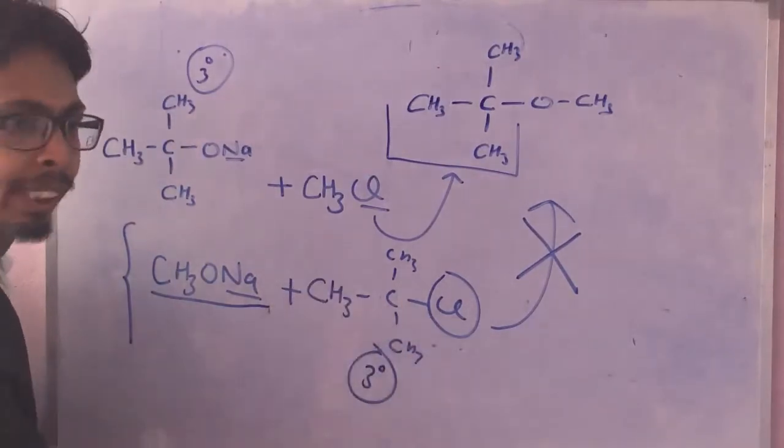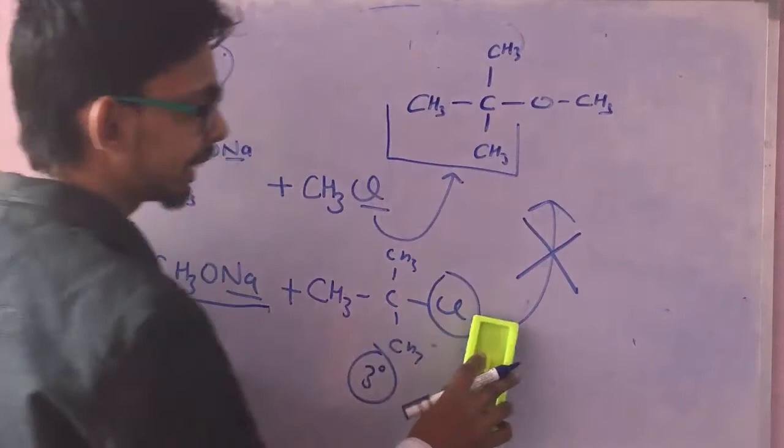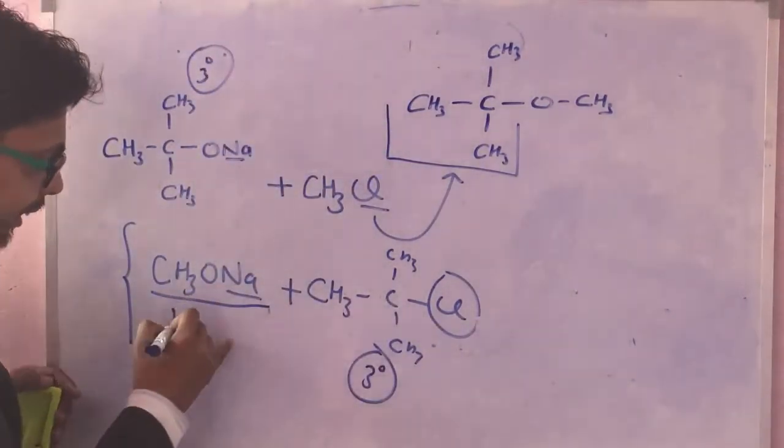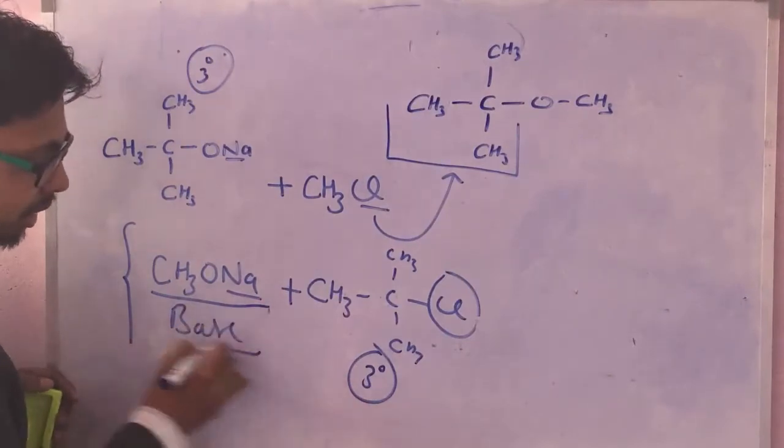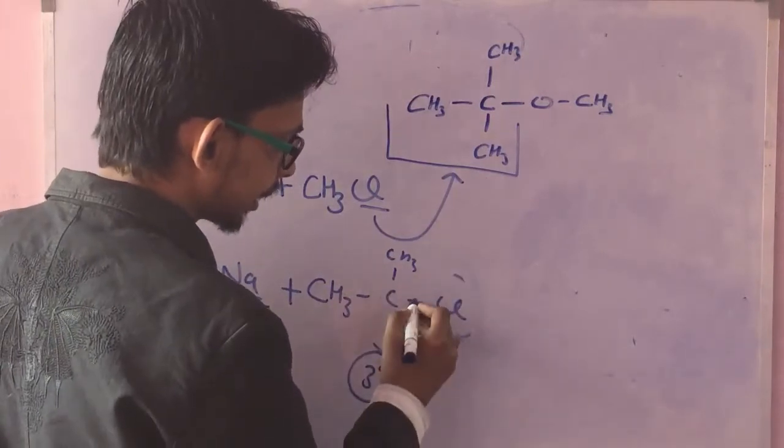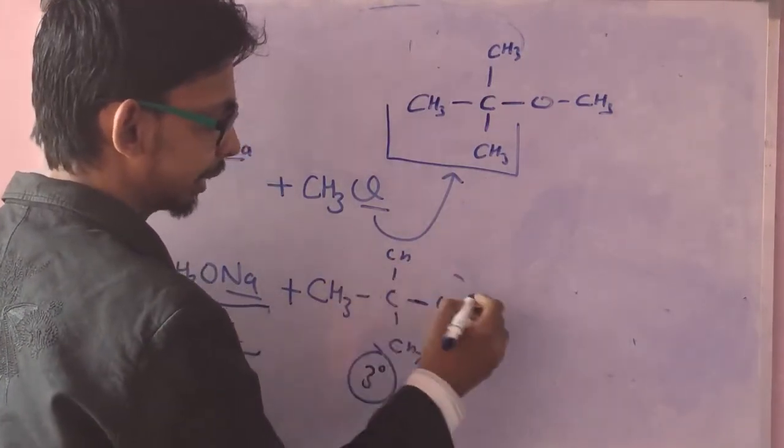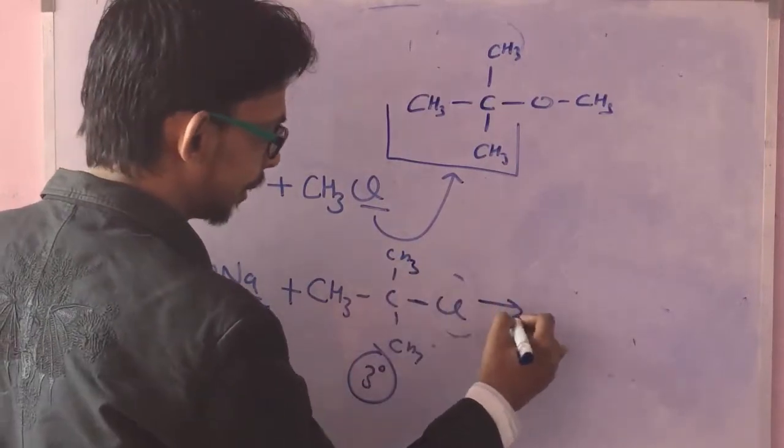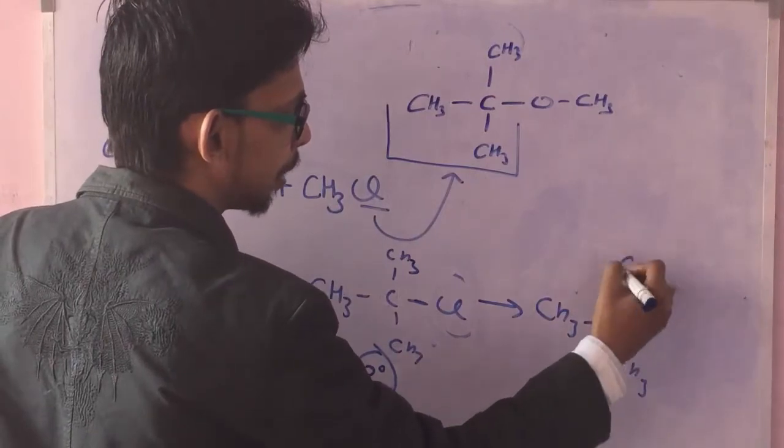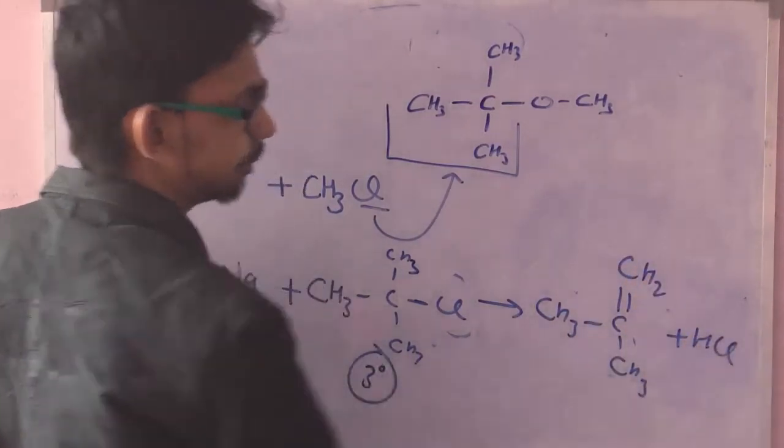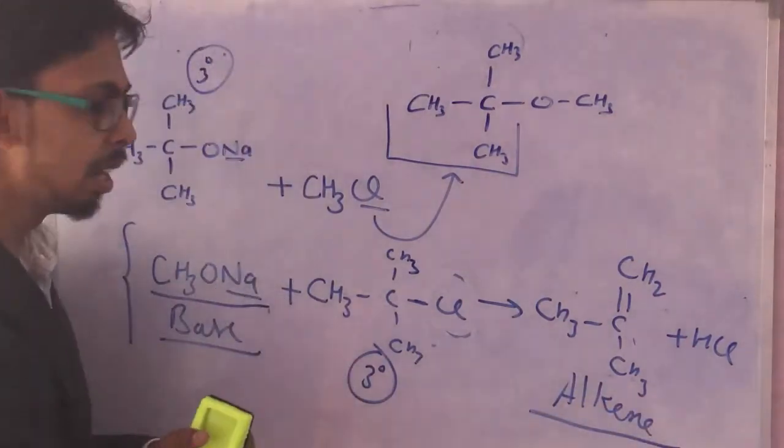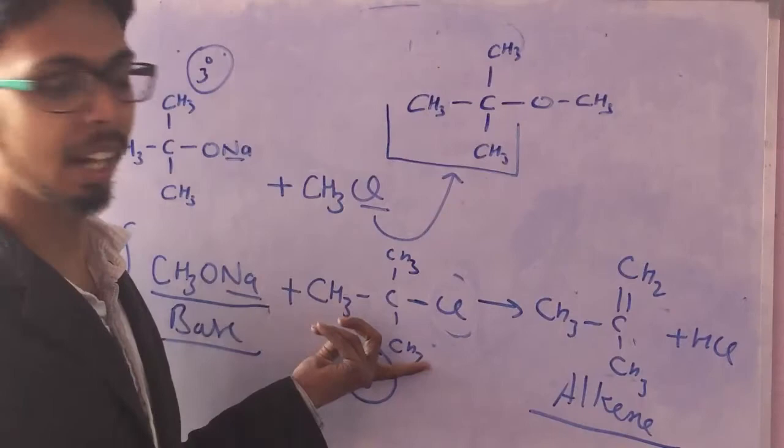Because tertiary alkyl halides are highly reactive for the elimination reaction, and this is a base, so beta elimination will take place. A chlorine would be released from here and a hydrogen from here. We will be getting CH3-C(CH3)=CH2 plus HCl. We get an alkene. If in Williamson synthesis we start with a tertiary alkyl halide, we'll get an alkene.